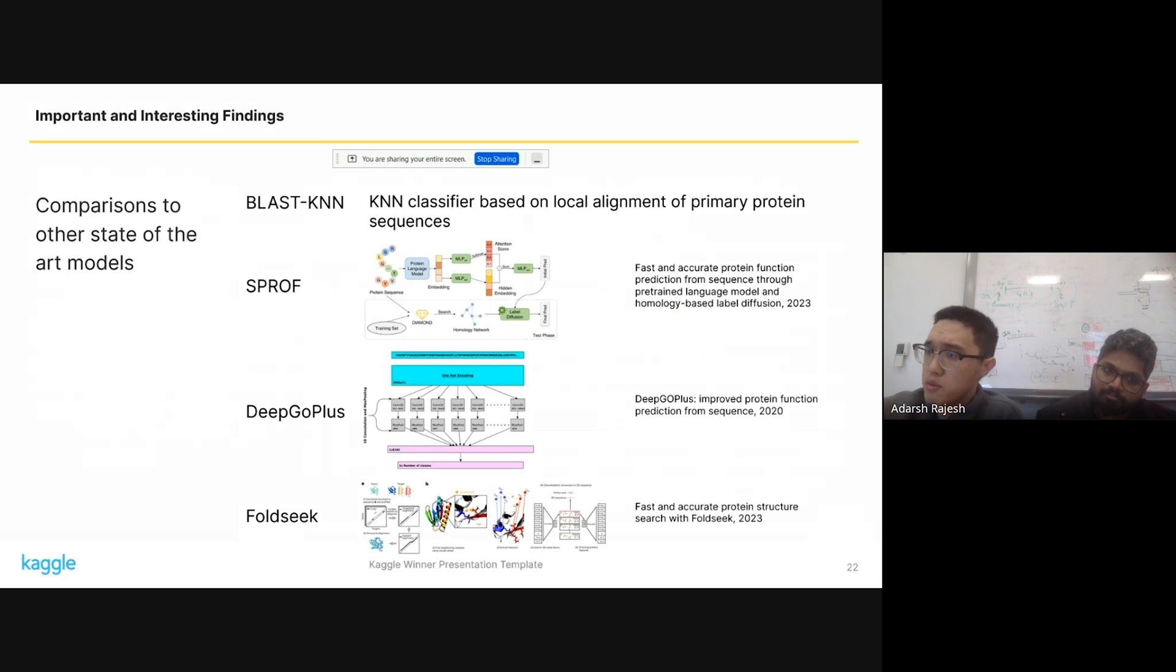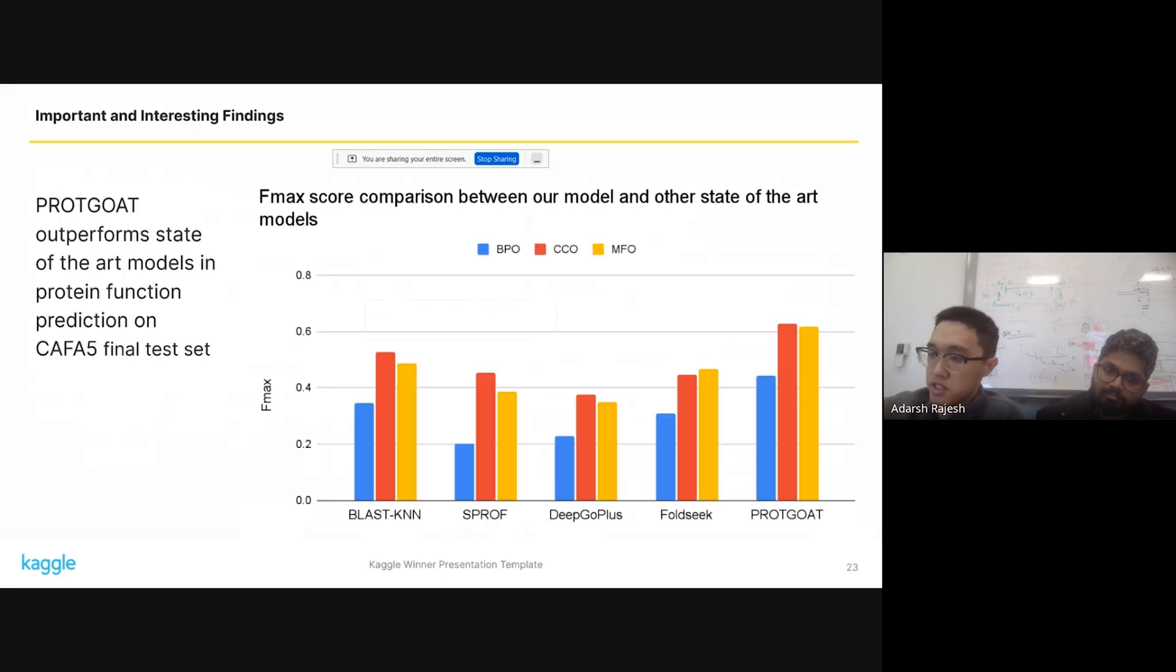So, other than that, we tried comparing the performance of a model with these sort of state-of-the-art machine learning models. And we found that, by itself, this sort of dense neural network approach seemed to outperform these other alternative machine learning models quite a bit. And these values here are actually taken directly from public notebooks on Kaggle, which other people have used to run.